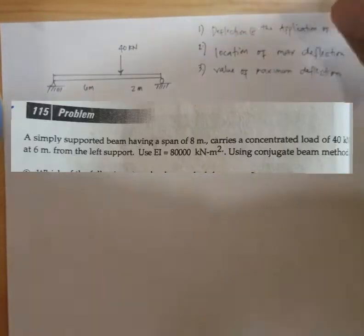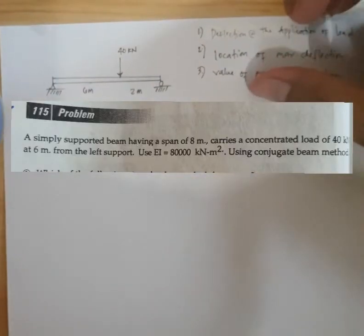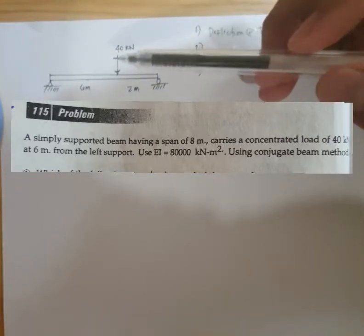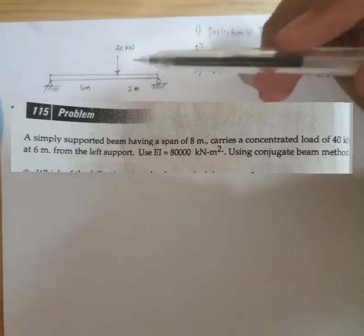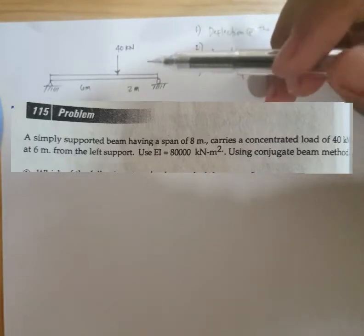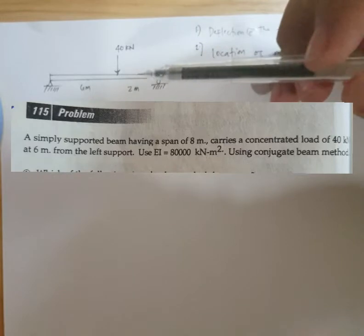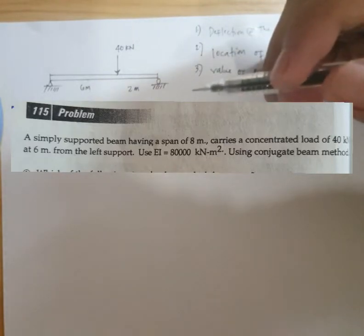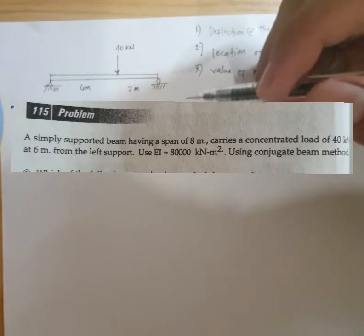Okay, so let's have this problem. A simply supported beam having a span of 8 meters carries a concentrated load of 40 kilonewton, concentrated load 6 meter from the left support. So use EI equal to 8,000 kilonewton meter squared. And let us use conjugate beam method.